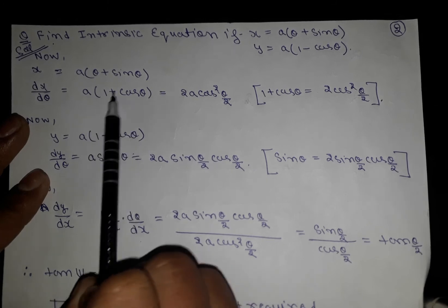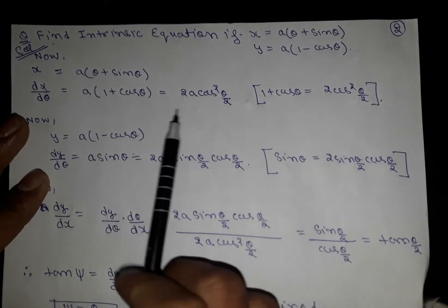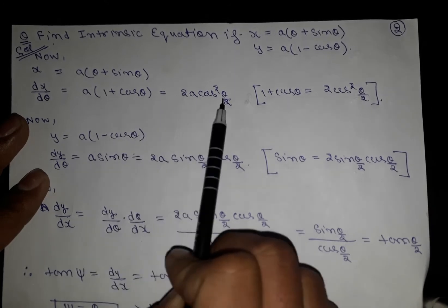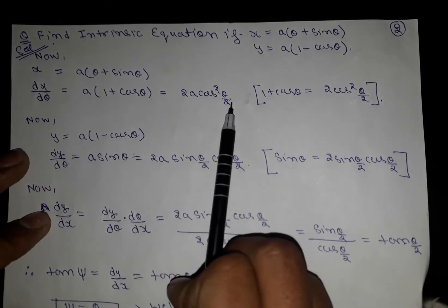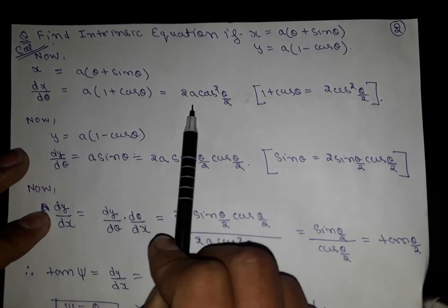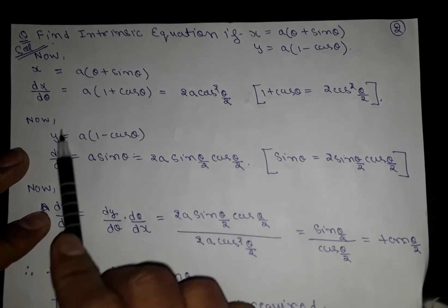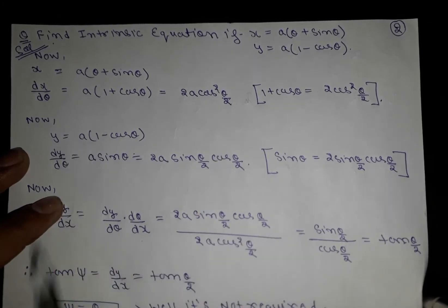We know that 1 + cosθ = 2cos²(θ/2), so dx/dθ = 2a cos²(θ/2). Now for y = a(1 - cosθ), we will differentiate it next.